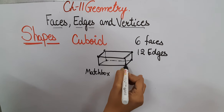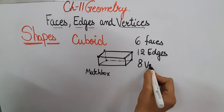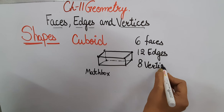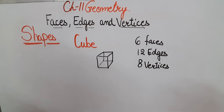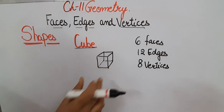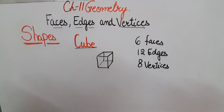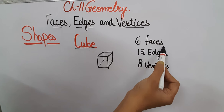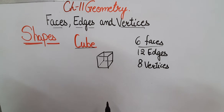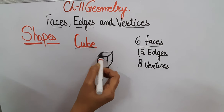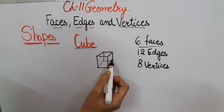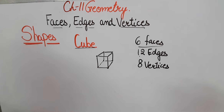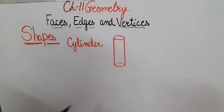The second shape is a cube. As we just discussed, a cube also has the same properties: six plane surfaces or flat surfaces known as faces, 12 edges, and eight corners or vertices — the same as in a cuboid.